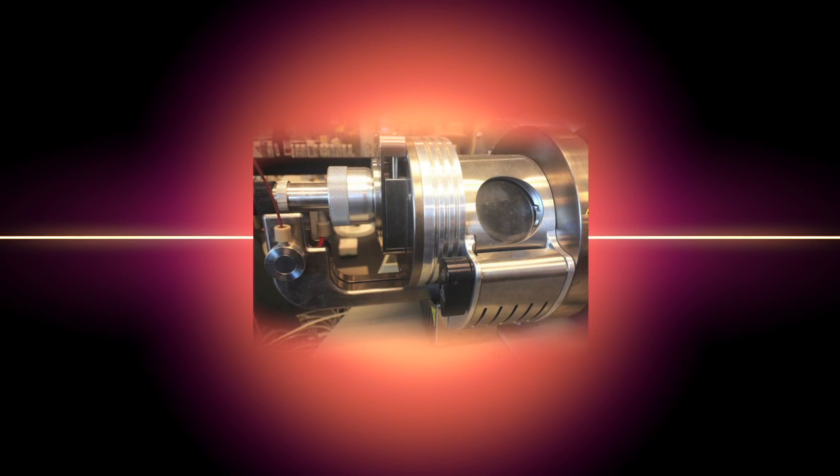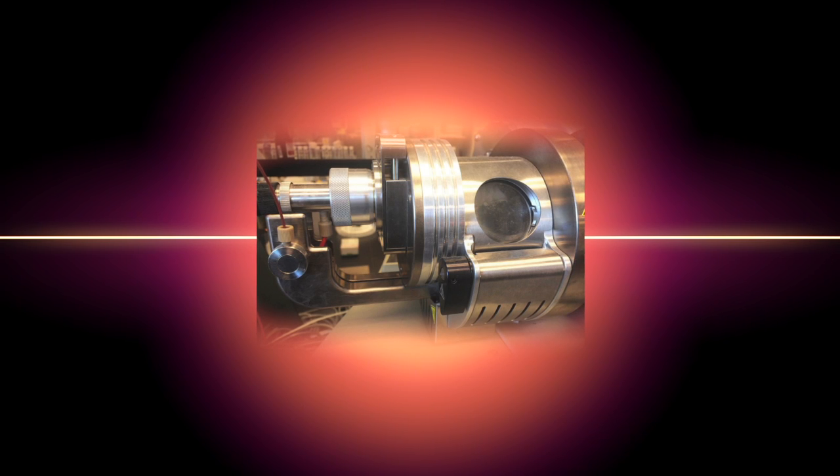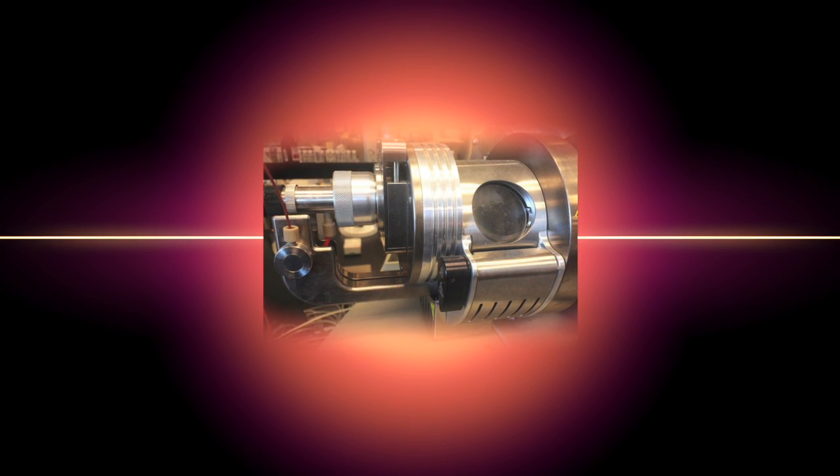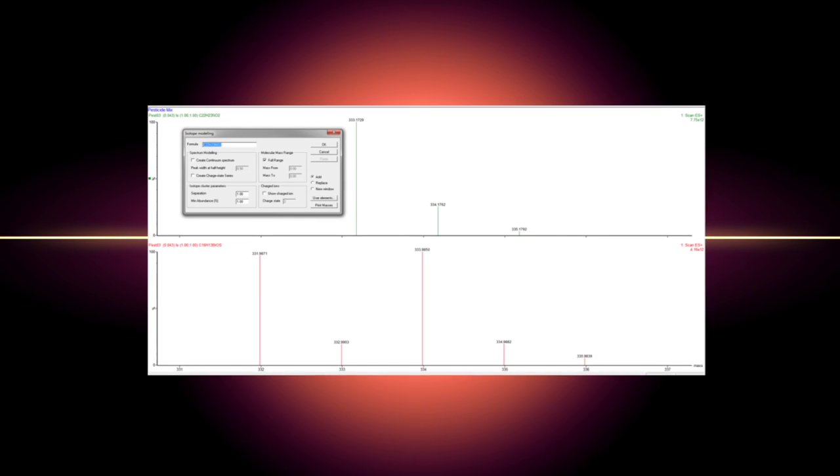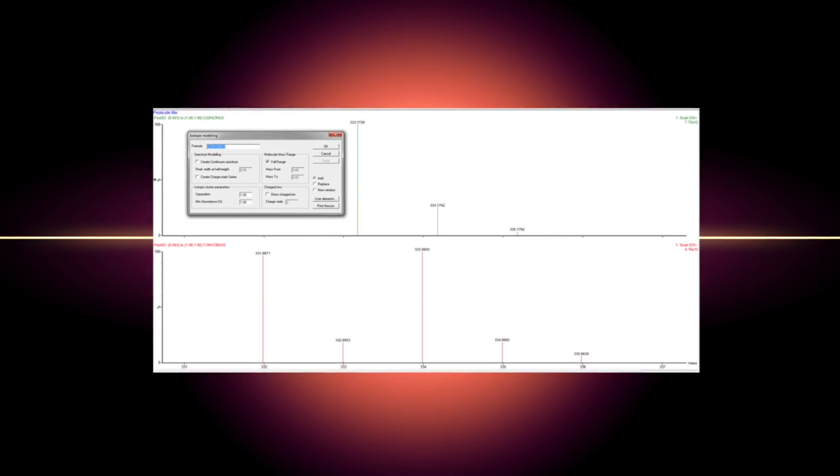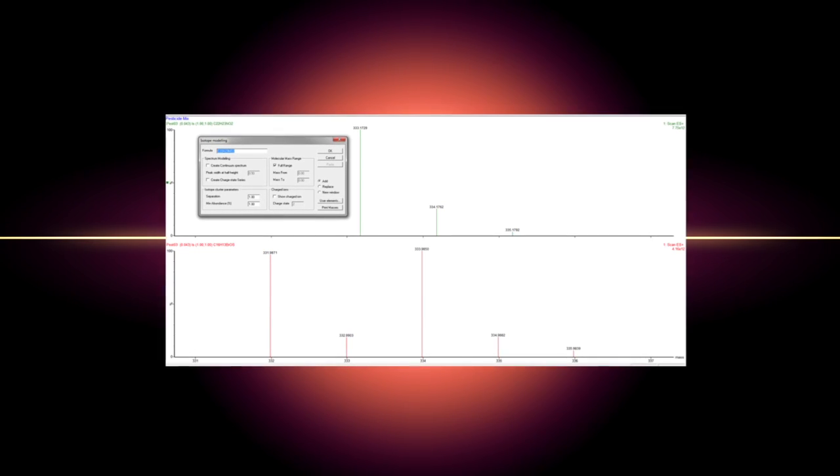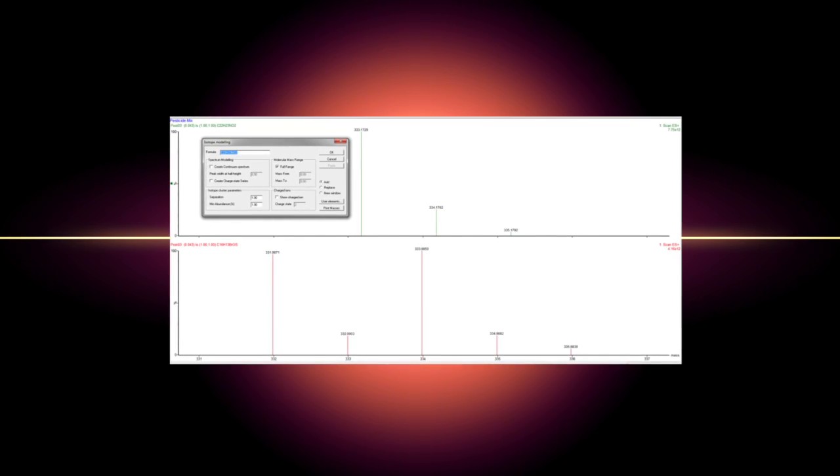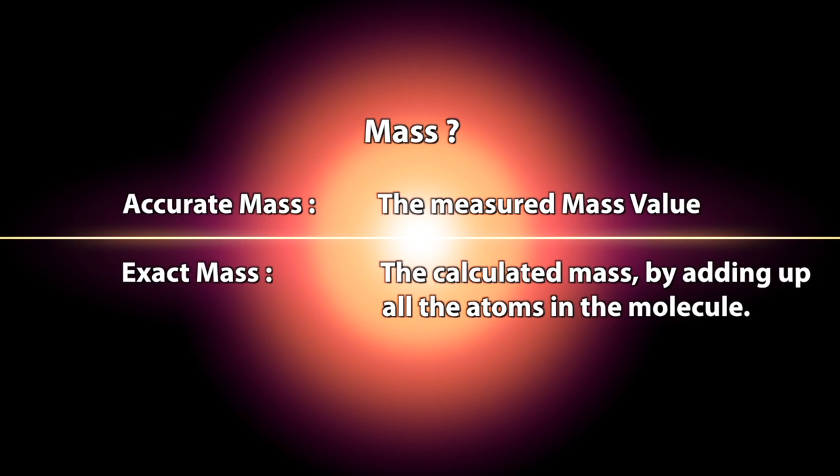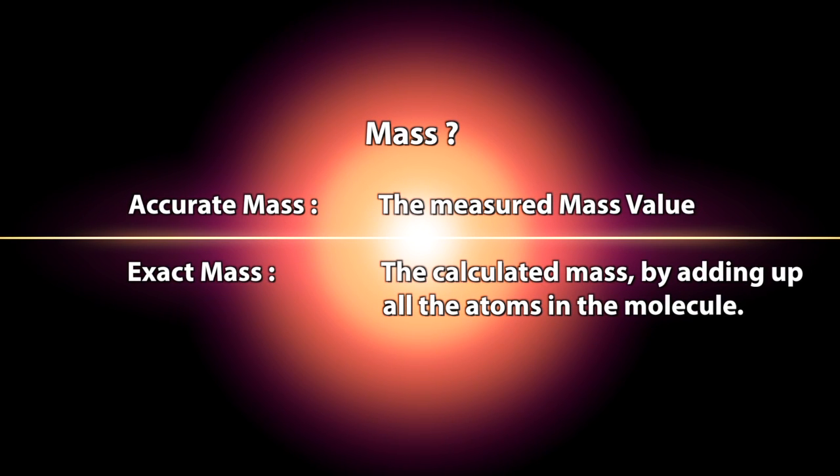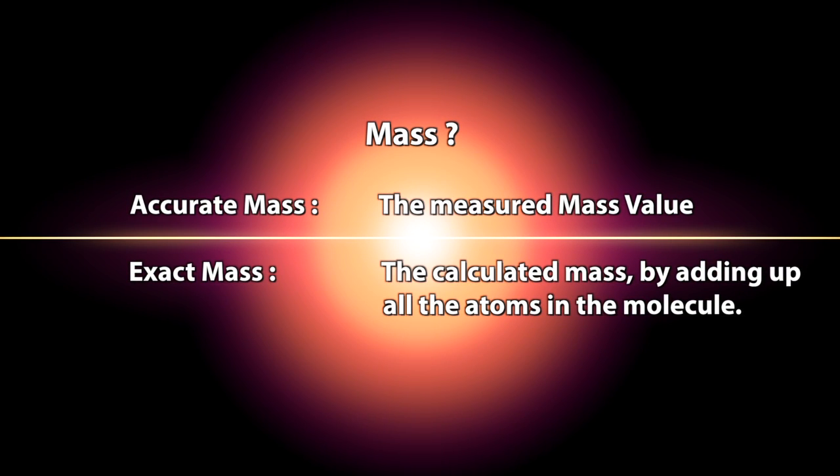This particular instrument has a quadrupole followed by a time-of-flight mass filter. Using a calibrant and the lock mass feature in the software, we can also acquire high-resolution data on the molecular ion and confirm the probability of a particular formula according to a comparison between the exact mass calculated and the accurate mass recorded by the instrument. Results have to be within 10 parts per million for publishing purposes.